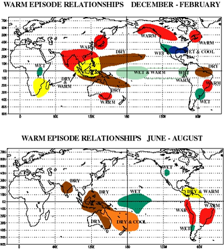El Niño events are thought to have been occurring for thousands of years, and it is thought that El Niño affected the Moche in modern-day Peru, who sacrificed humans in order to try to prevent the rains. It is thought that there have been at least 30 El Niño events since 1900, with the 1982–83, 1997–98 and 2014–16 events among the strongest on record. Since 2000, El Niño events have been observed in 2002–03, 2004–05, 2006–07, 2009–10, 2014–16, and 2019.